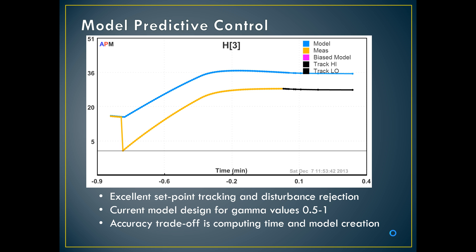We found that for some reason in this model it didn't work for gamma values below 0.5, but it had excellent set point tracking and disturbance rejection. A couple trade-offs were that it took additional time for computing and it would take additional time and resources to create this model.